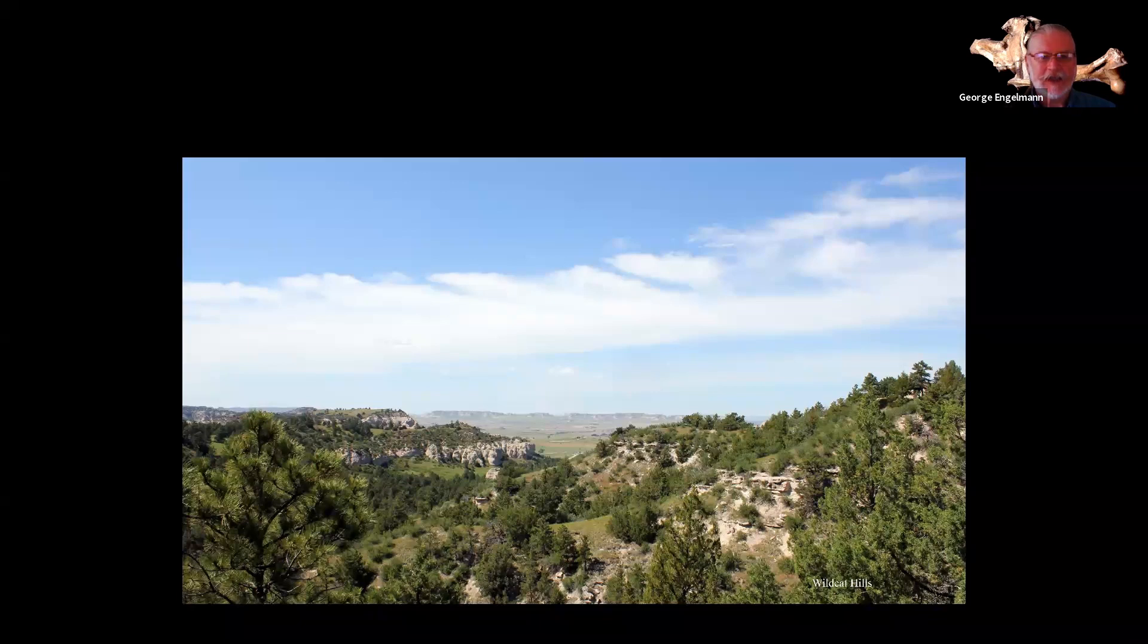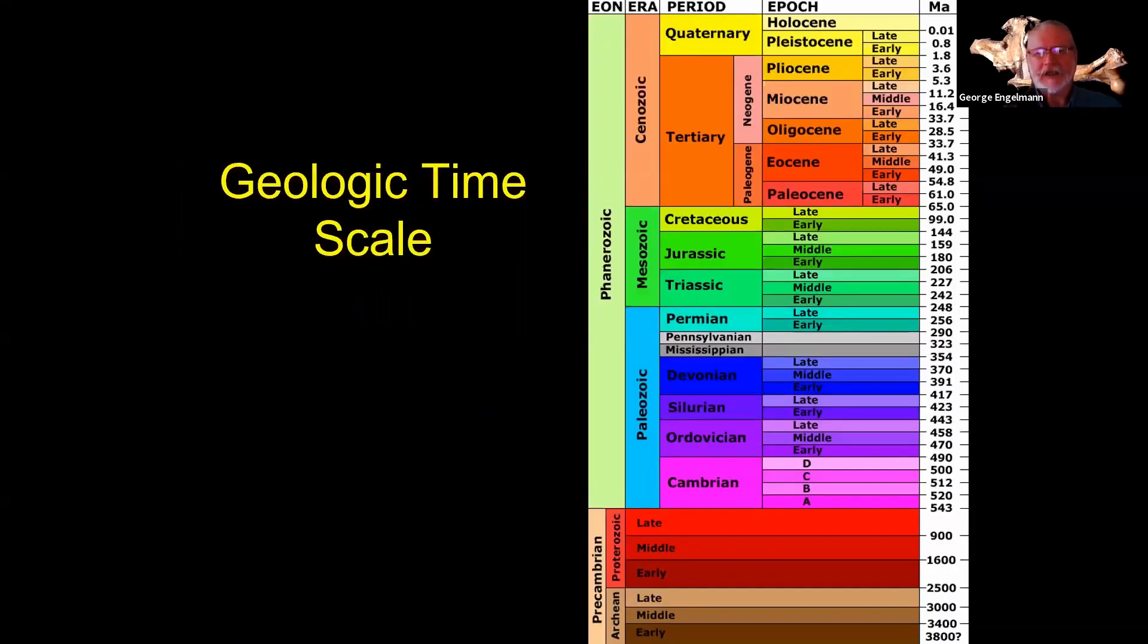To understand something of that, we want to look at some geology. This is the geologic time scale. The Earth as a whole is about 4.6 billion years old, but we don't really have any direct record of the earliest parts of it. The earliest rocks that we have started around 3.8 billion years old, and there's nothing that old in Nebraska. The record here in Nebraska doesn't start until somewhat later, up in what's called the Proterozoic, the later part of the Precambrian, but still on the order of 1.5 billion years ago, and none of that really shows up at the surface.